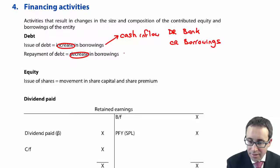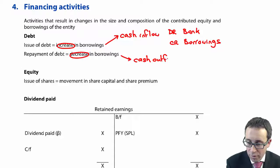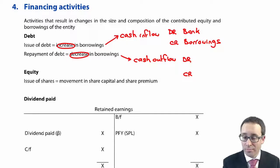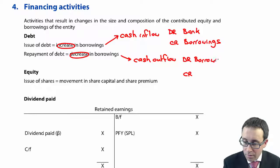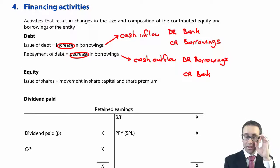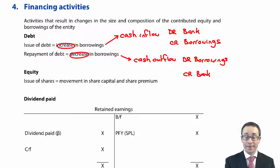If you've repaid the debt, that means there is a decrease in borrowings, so is it a cash outflow? With a decrease in borrowings, there is a reduction in the liability. So you debit the borrowings and credit the bank. As there is a credit to the bank and a reduction in the borrowings, you have a cash outflow.